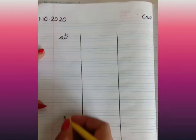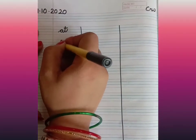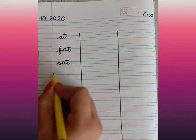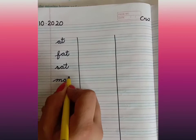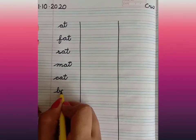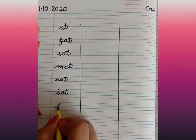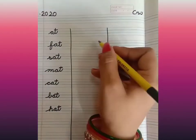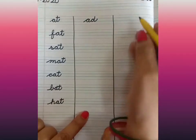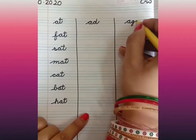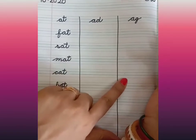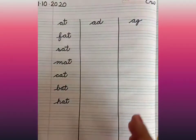Write 'at' then the 'at' words: fat, sat, mat, cat, bat, hat. Then write 'ad' and the 'ad' line. Then next is 'ag' and all the 'ag' words: rag, tag, bag. So three lines on this page and other three lines on the next page.